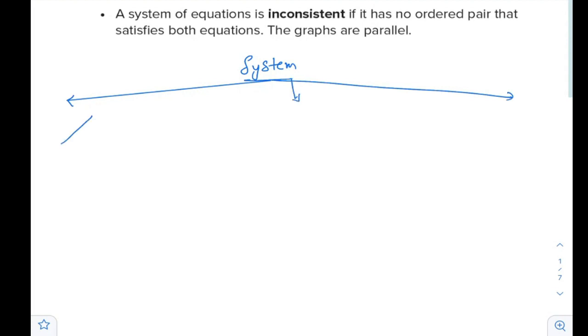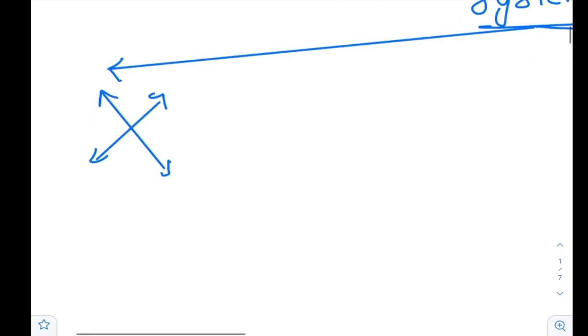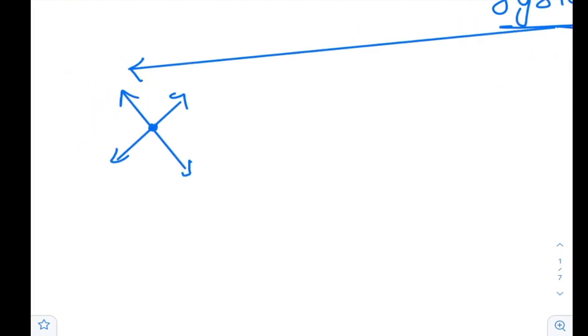First thing, you have first line and another line crossing. So in this case, they will have one solution. The solution is the common point, the shared point, which is shared by line number one and line number two.